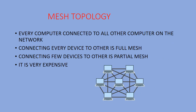Next is mesh topology. Here each and every computer is connected to all other computers. There are two types: full mesh, where every device is connected to all other devices, and partial mesh, where only a few devices are connected to each other. The main disadvantage is that it is very expensive since we are using many more wires.